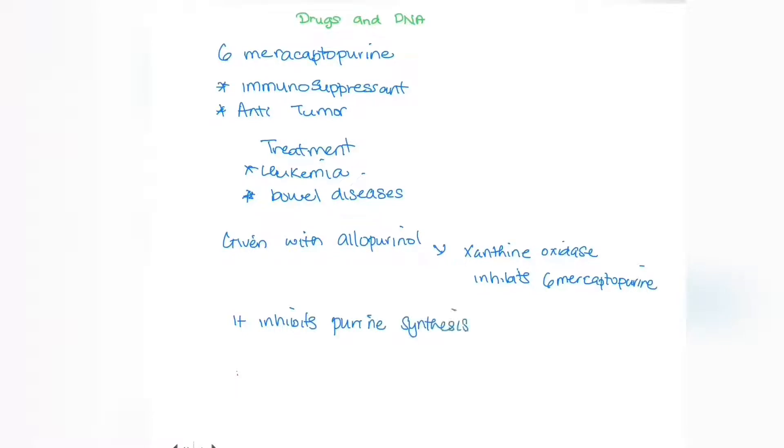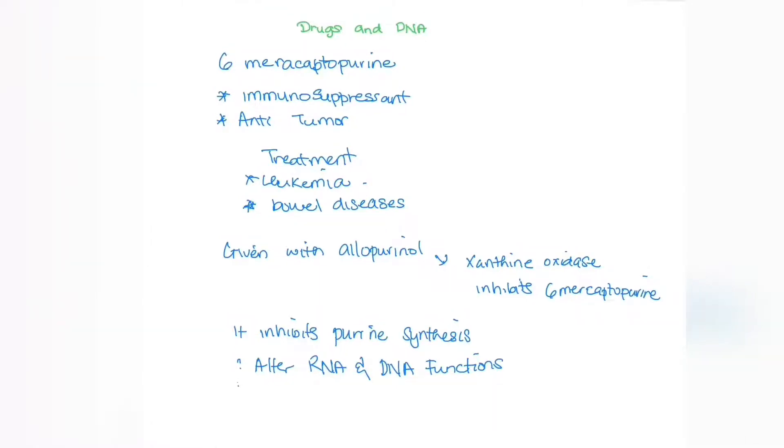This xanthine oxidase can inhibit our 6-mercaptopurine, so we give this drug with allopurinol to prevent its breakdown. 6-mercaptopurine works by inhibiting RNA and DNA function by inhibiting glutamine PRPP amidotransferase enzyme.